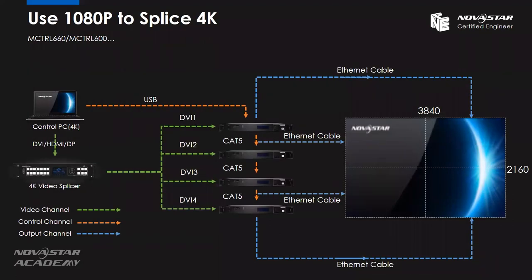First, we use the 1080p level to realize 4K. In this structure, the sending card I'm using is the M-Control 660. There will be three channels: the orange one represents the control channel, yellow and green represent the video channel, and blue represents the output channel. We use a USB cable to connect the control PC to the first sending card. The control PC also provides a video source to a 4K splicer. The control PC must be capable of outputting a 4K resolution video source to the 4K video splicer.